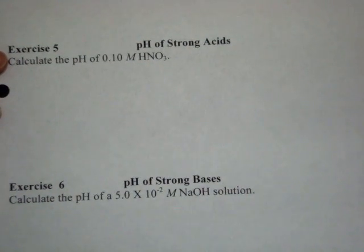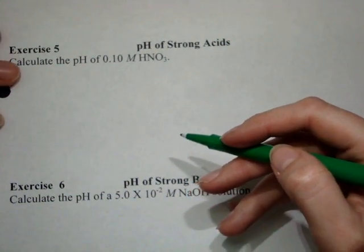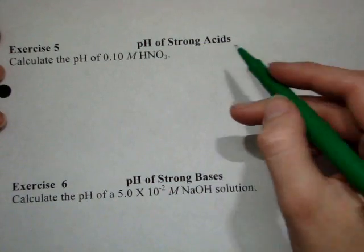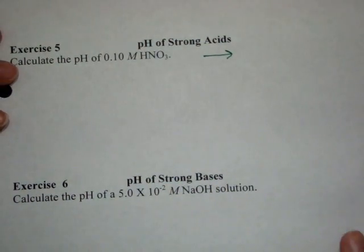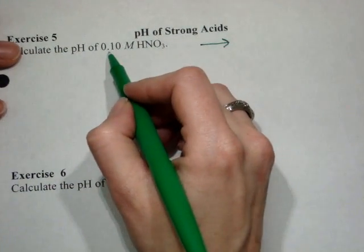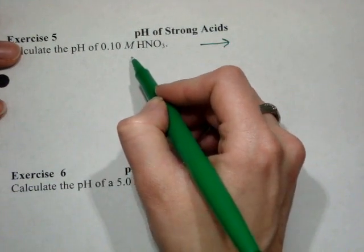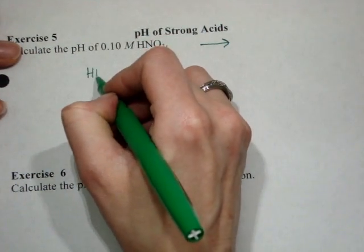Okay, last topic for this session for pH is looking at strong acids and strong bases, which dissociate completely. So whenever we do these, we're talking about a single arrow totally to the product side. We can assume that the concentration that we started with here entirely becomes the concentration of our products.